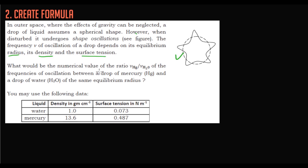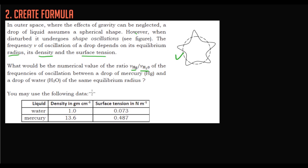The frequency ν of oscillation of a drop depends on its equilibrium radius, density, and surface tension. We have to find the ratio of the oscillation frequency of mercury to water, given the same equilibrium radius. The densities and surface tensions for both liquids are given in the table.